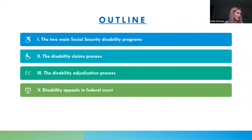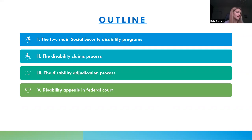A brief outline of what we'll cover: explaining the difference between the two social security disability programs, going through the claims process and the adjudication process, and then briefly discussing appealing into federal court, which is the last shot at getting benefits.